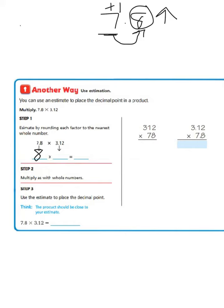Now let's look at 3 and 12 hundredths. We're rounding to the nearest whole number, so we look in the ones place. To know whether we round up or stay the same, we look to our right and see a 1. Since four or less lets it rest, and 1 is less than 5, we let the 3 rest. So 3 and 12 hundredths rounded to the nearest whole number is 3. And we know that 8 times 3 equals 24.